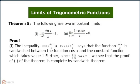The inequality cos x is less than sin x divided by x is less than 1 for mod x greater than 0 and less than π by 2 says that the function sin x divided by x is sandwiched between function cos x and the constant function which takes value 1. Further, since limit x tends to 0 cos x equals to 1, we see that proof of the first theorem is complete by sandwich theorem.